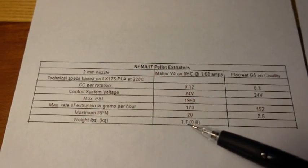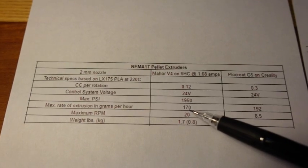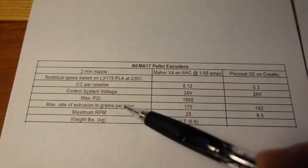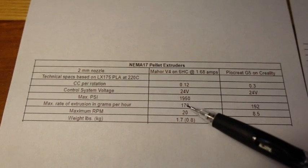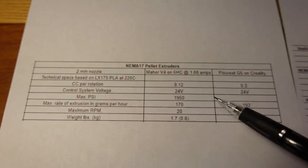It weighs a little over a pound and a half and can extrude up to 170 grams per hour. Now this is one of the key constraints people ask me about all the time - how much can this extrude? This is as much as I can get out of it using LX175 PLA at 220C.